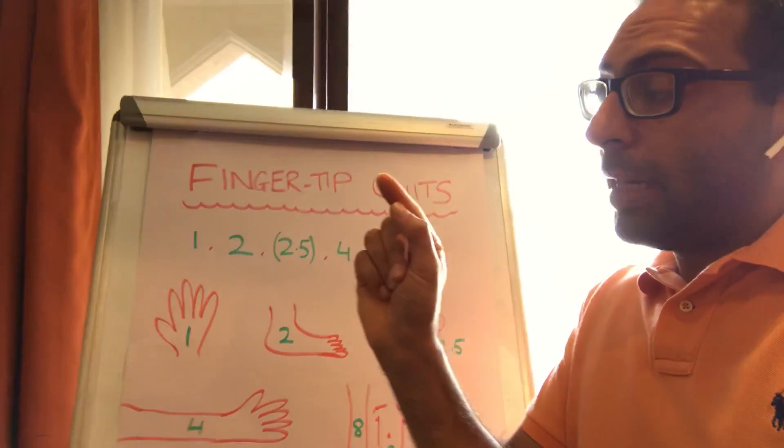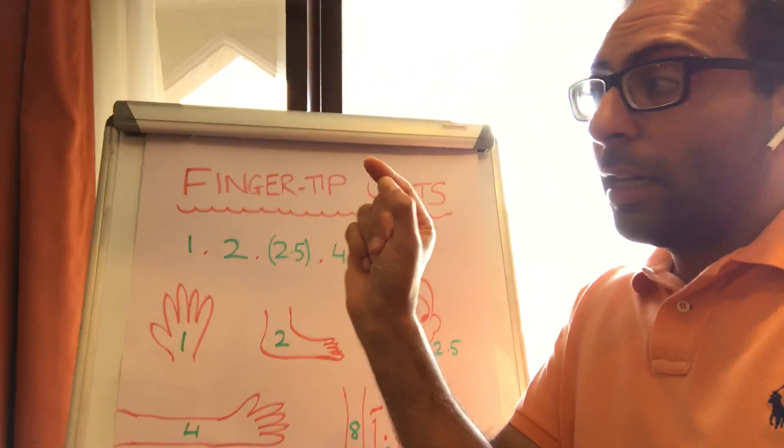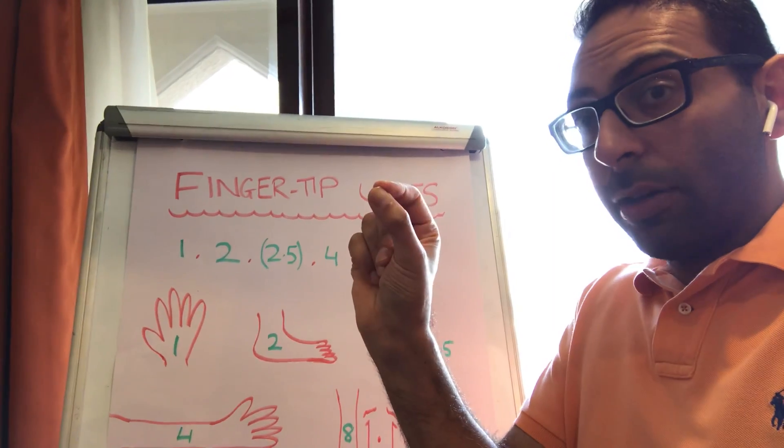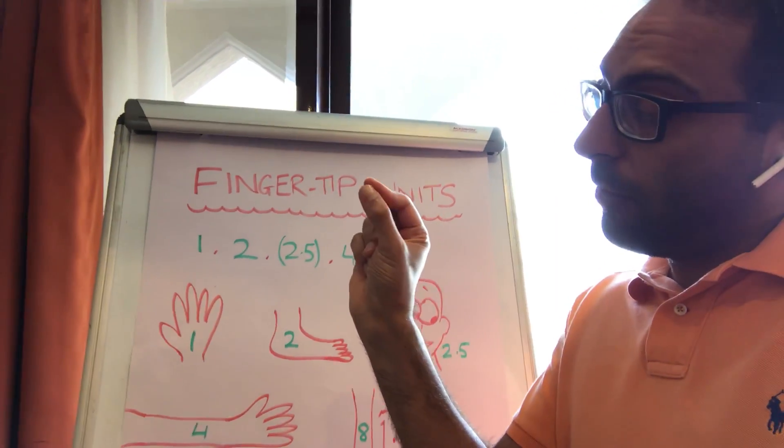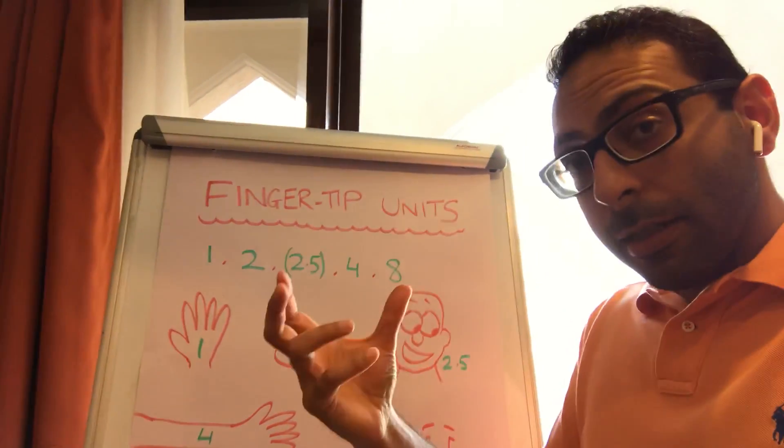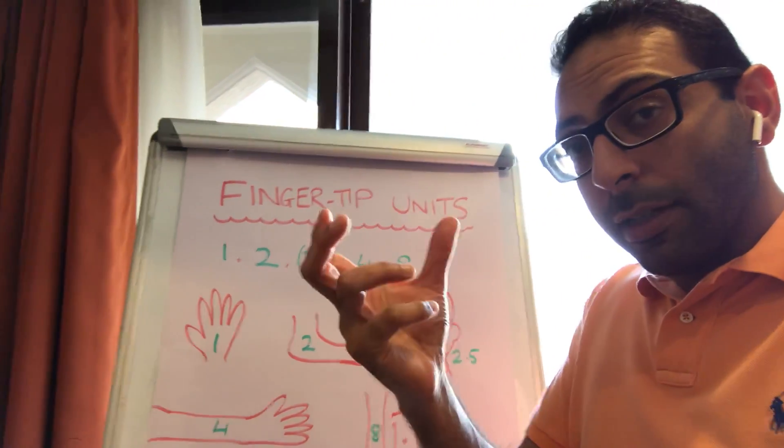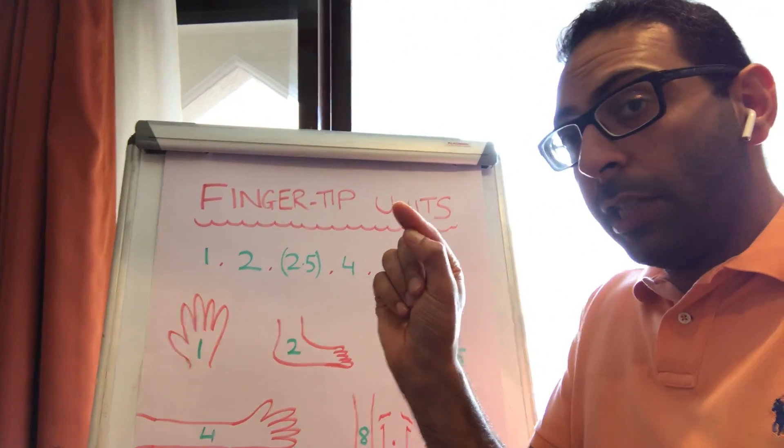So, one fingertip unit is the amount of cream that goes between this part of your finger and this part of your finger when you squeeze it out, i.e. it's the amount that covers your fingertip. For adults, presuming using a 5mm nozzle which most standard creams will come with. That's one FTU.